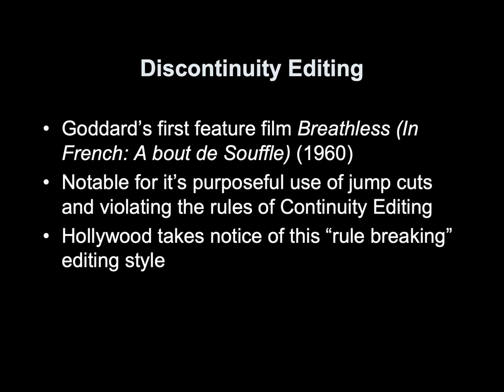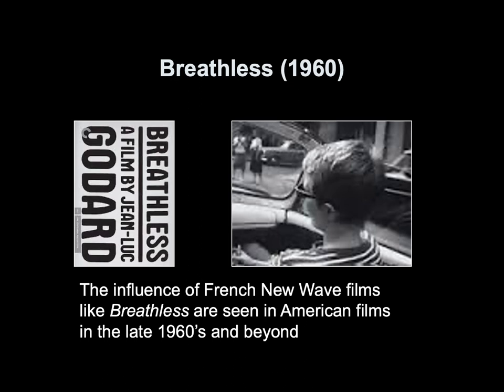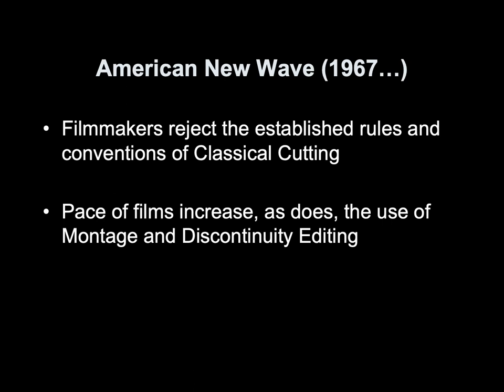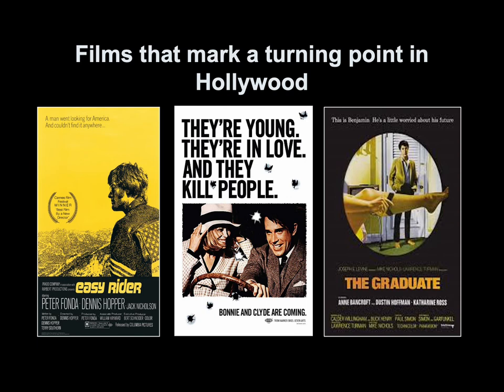Hollywood took notice of this rule-breaking editing style. The influence of French New Wave films like Breathless is seen in American films in the late 1960s and beyond. D.D. Allen, editor of Bonnie and Clyde, was a pioneer of editing in Hollywood who also broke the rules of classical cutting and continuity editing. The American New Wave of 1967 saw filmmakers rejecting established conventions of classical cutting. The pace of films increased, as did the use of montage and discontinuity editing. Films that mark a turning point include Easy Rider, Bonnie and Clyde, and The Graduate.